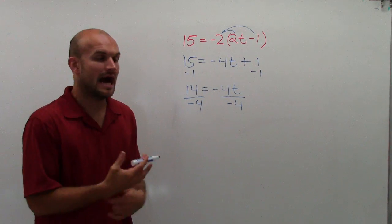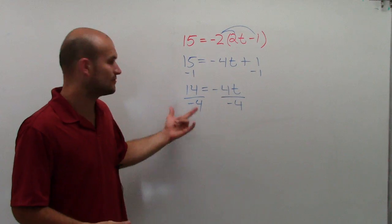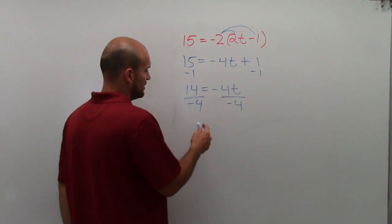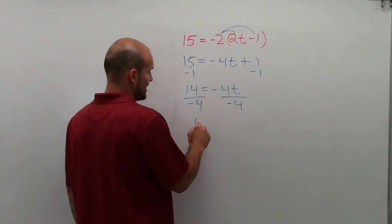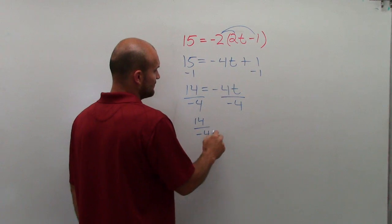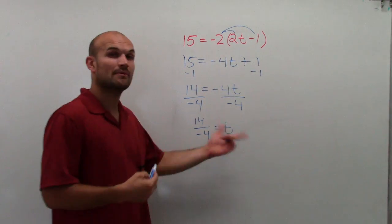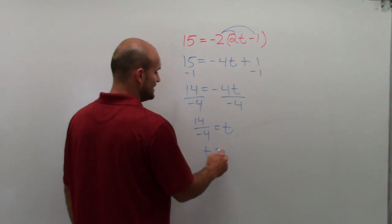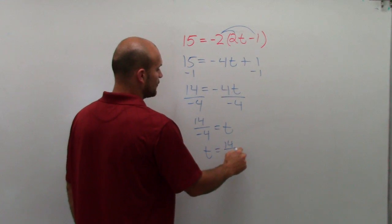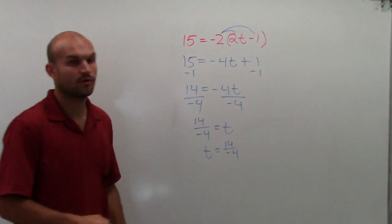but I prefer just to keep my answer as 14 divided by negative 4 equals t, which then we want to rearrange. So I say the value of t is equal to 14 over negative 4.